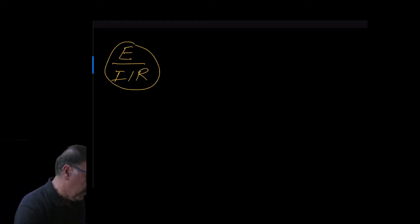If we cover up the E, and we want to find E, that's E equals I times R. If we want the current I, we cover up I, and it's E over R. And if we want the resistance, cover up R, and it's E divided by I.